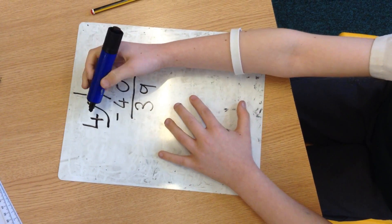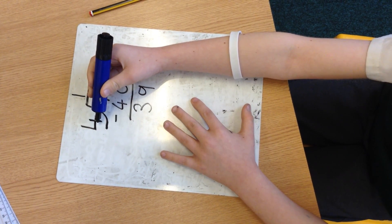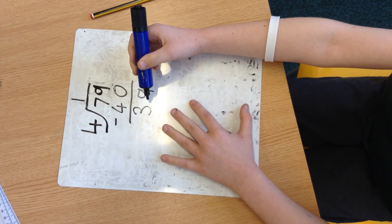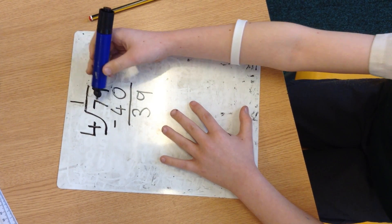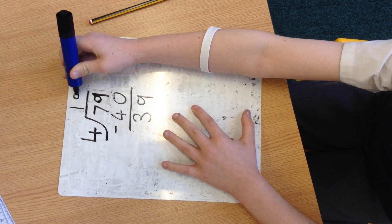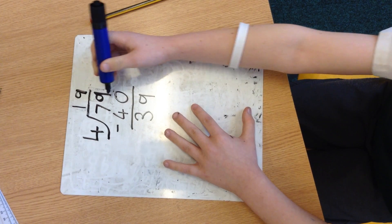Next, you would have to figure out how many fours can you fit into 39, which would be 9. So you would put a 9 above the 9 here.